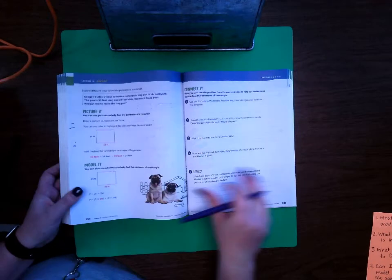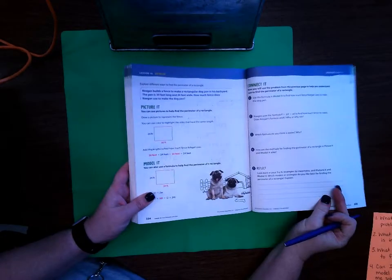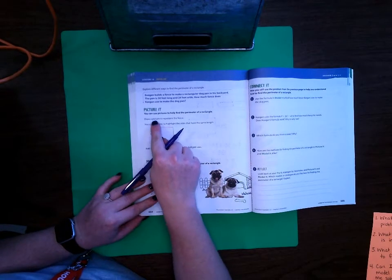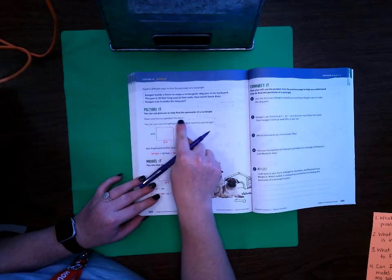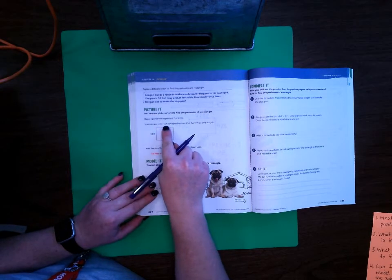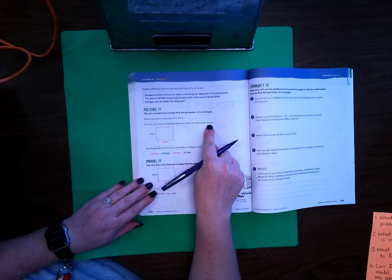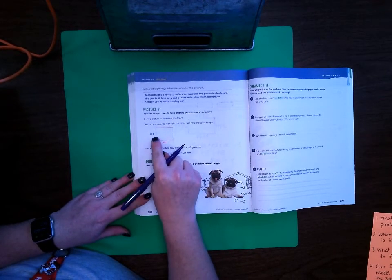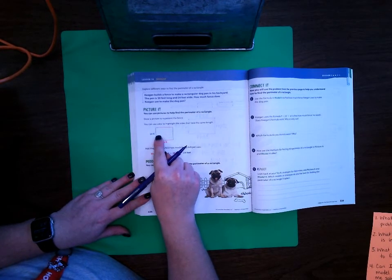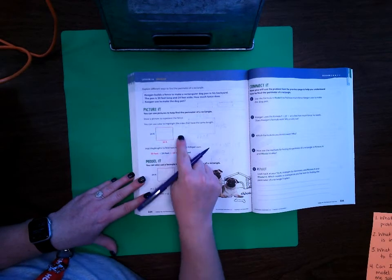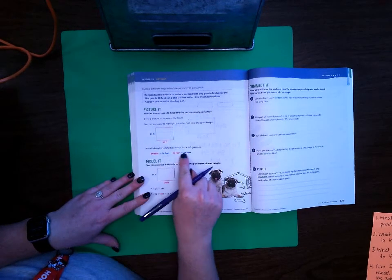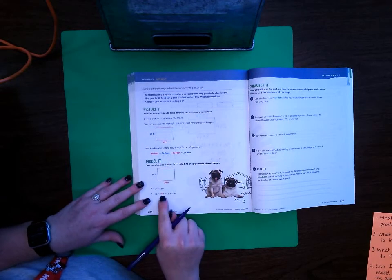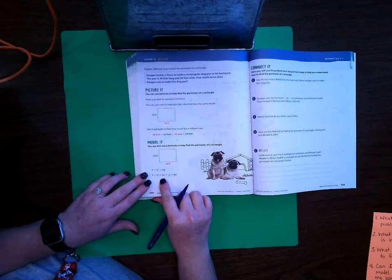Let's go ahead and turn to page 334. On 334 we see here it says draw a picture to represent the fence. You can use color to highlight the sides that have the same length. Well we see here that the red sides, the top and the bottom, have the same length and the blue sides on the left and the right have the same length or width. Right here is the first way we solved it where we just add the four together and then down here is the third way of how they solved this.